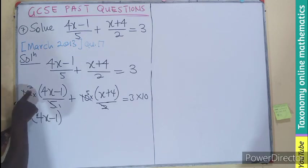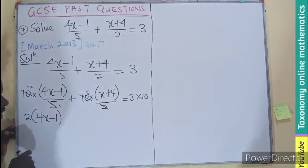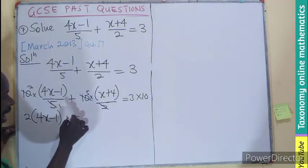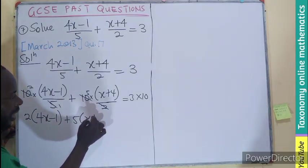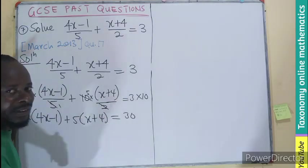So this 2 will multiply the entire 4x minus 1. Otherwise, you would use the 2 just to multiply the 4x, ignoring the minus 1, which would make your answer wrong. Plus 5 into bracket x plus 4 equals 30.